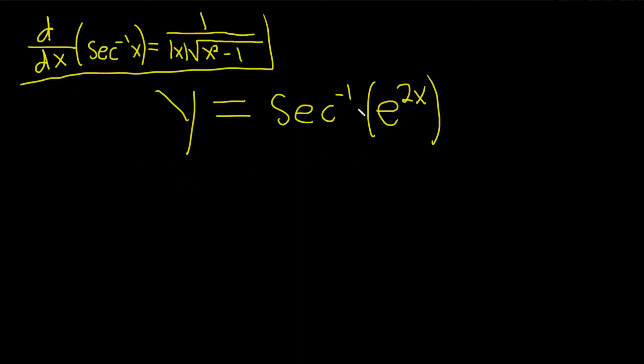Here we have secant inverse of e to the 2x. We take the derivative and leave the inside piece untouched, that's e to the 2x, and then multiply by the derivative of the inside, which is the derivative of this. That's the chain rule. Let's do it.